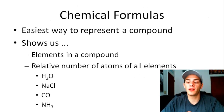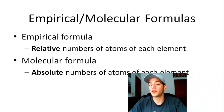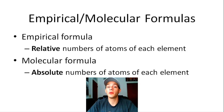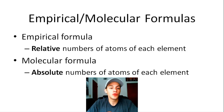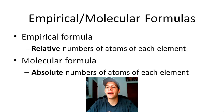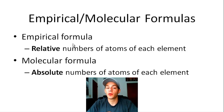Within chemical formulas, there are two main types: empirical formulas and molecular formulas. Empirical formulas show the relative numbers of atoms of each element — the lowest reduced ratio. Molecular formulas show the absolute numbers of atoms of each element, exactly how many atoms of each individual element are present. The molecular formula is always going to be some whole number multiple of the empirical formula.